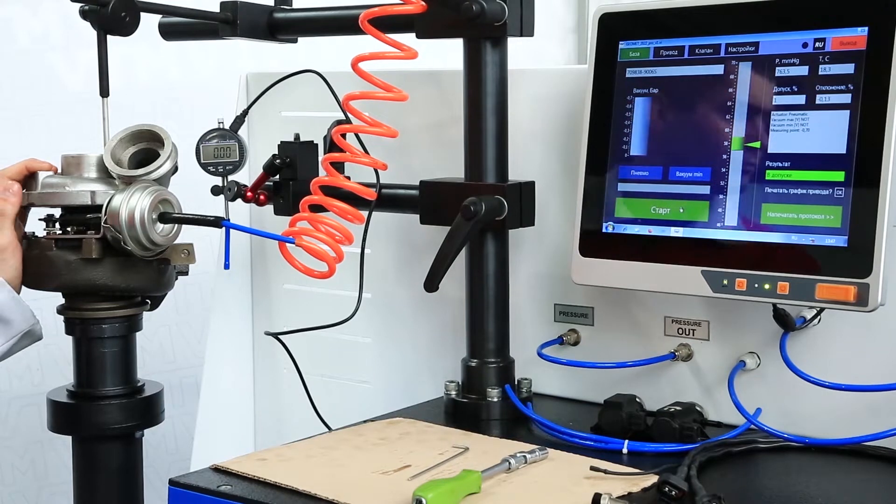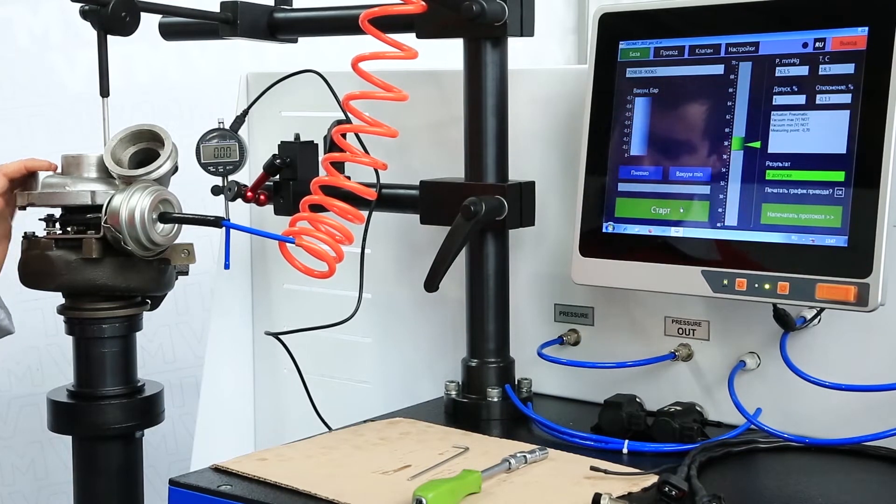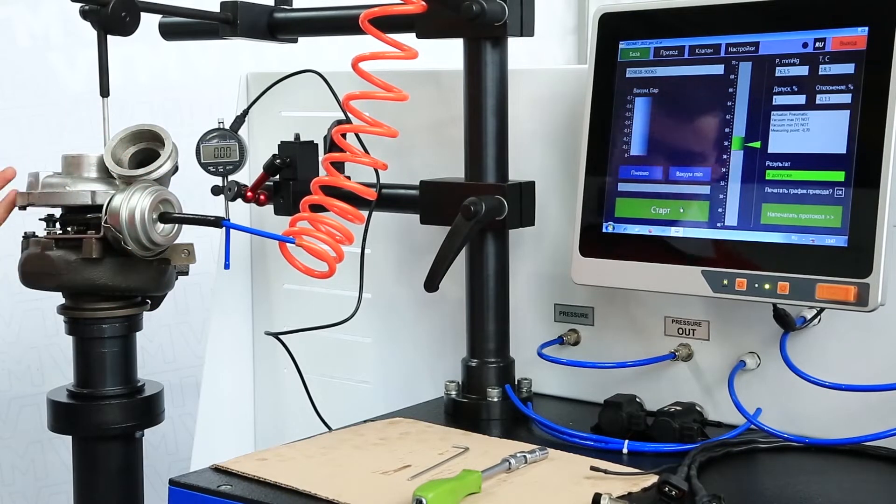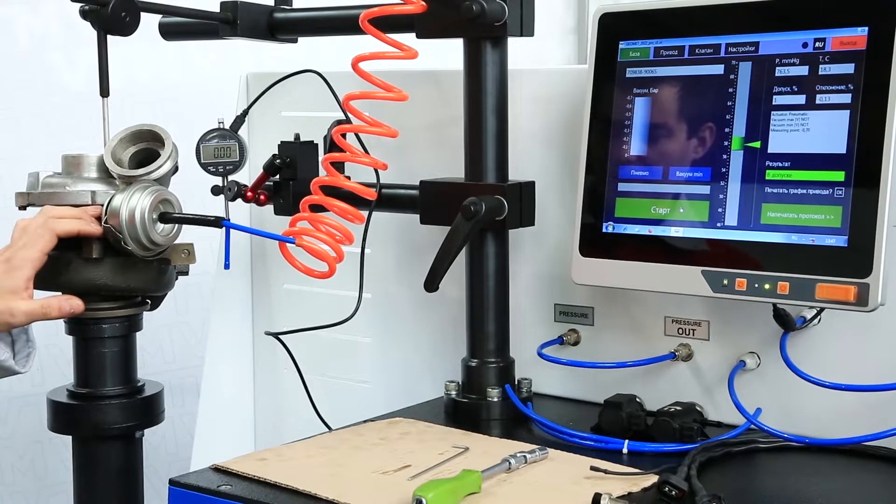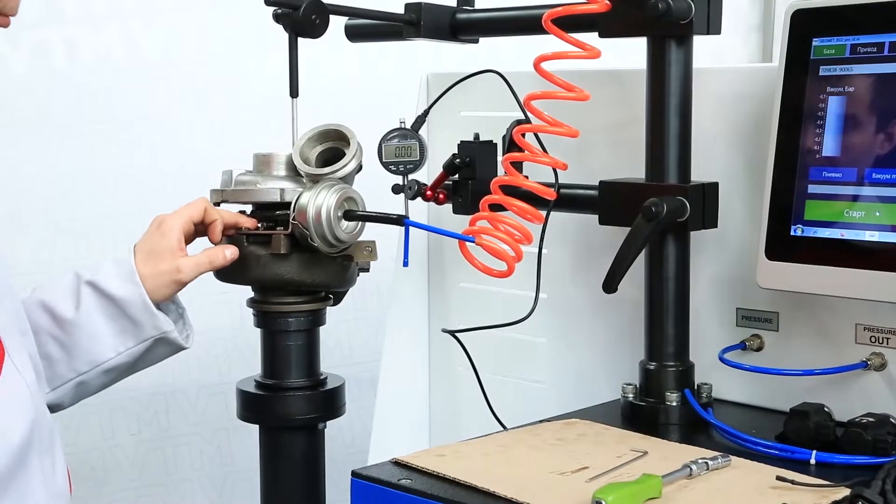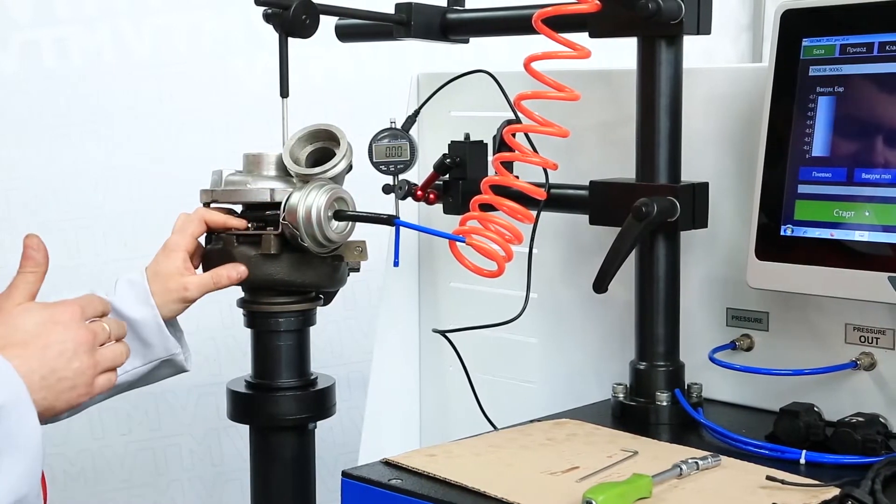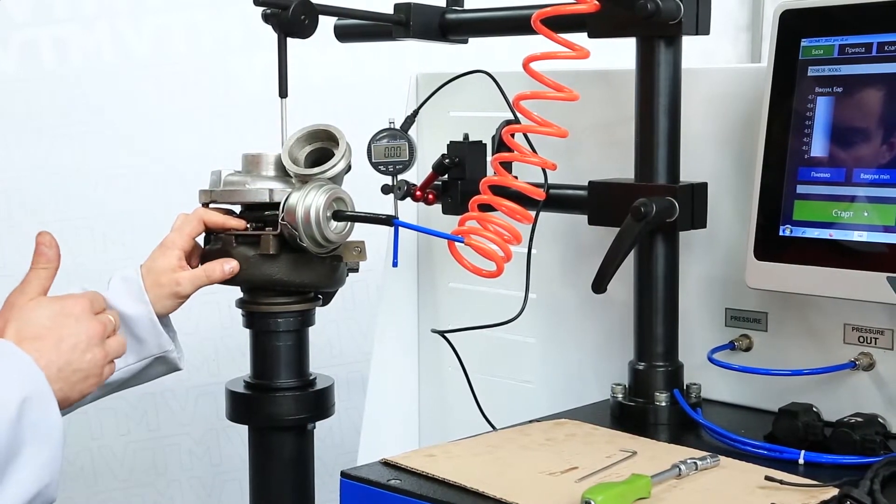In a pneumatic vacuum type turbocharger, two settings are mainly present: the stop and the rod. The stop adjusts the airflow through the turbocharger. The rod adjusts the pressure, the negative vacuum pressure, at which the geometry of the turbocharger begins to open.